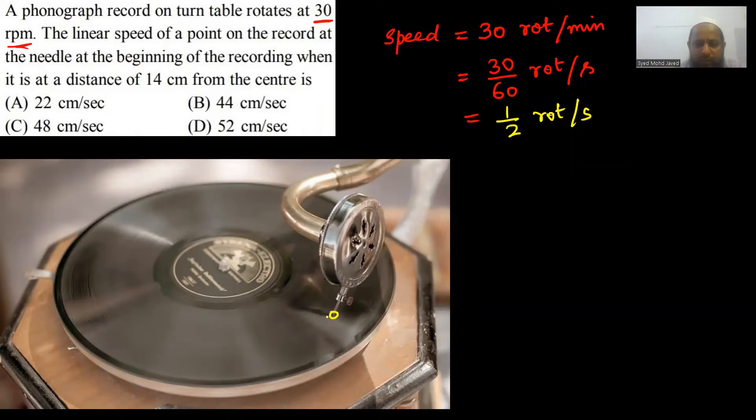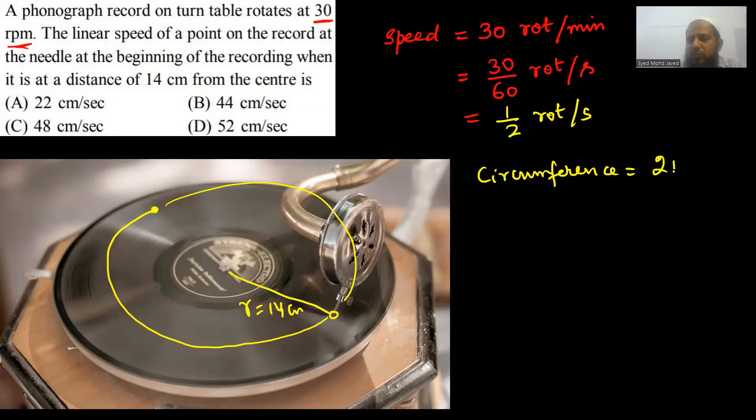Now, this point rotates. The whole circumference, if the radius is 14 centimeters, we take circumference. Circumference is 2 pi r, which is 88 cm. We don't have to change it, it's 88 cm.